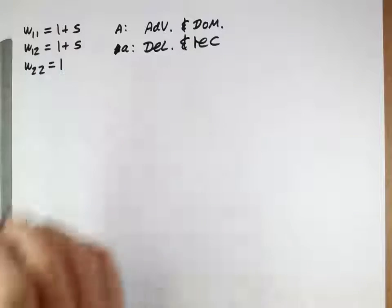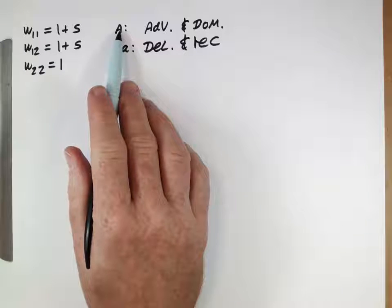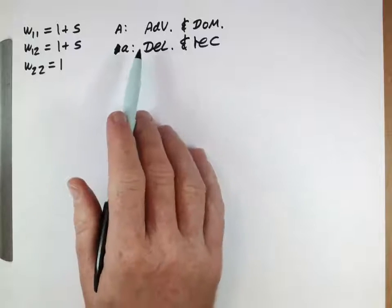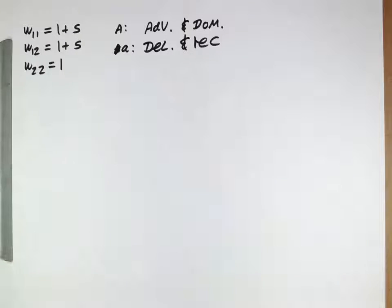So, if we're looking at fitnesses like this, we're looking at the selection for an advantageous dominant capital A allele, or selection kind of against a deleterious recessive lowercase allele.